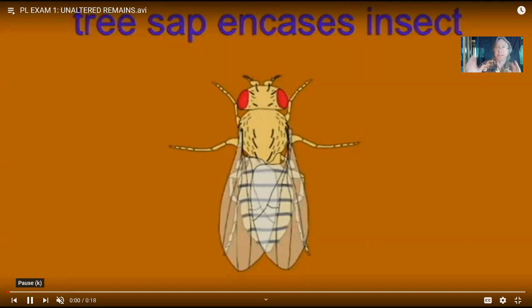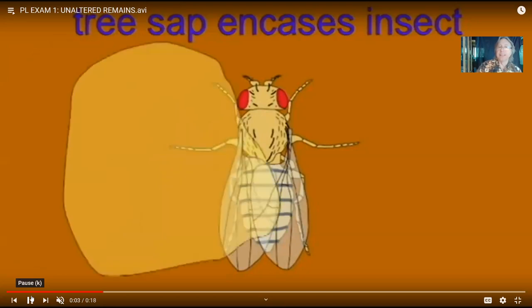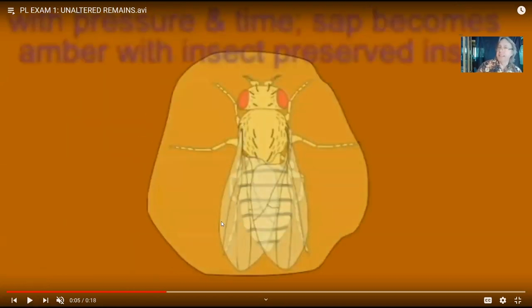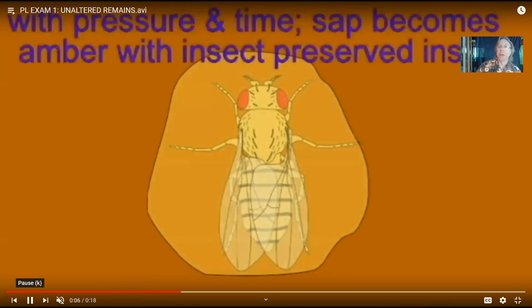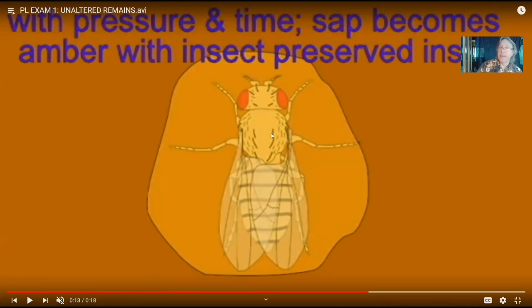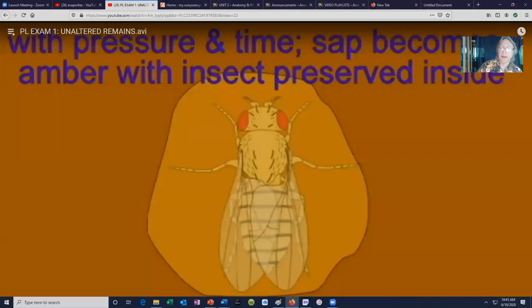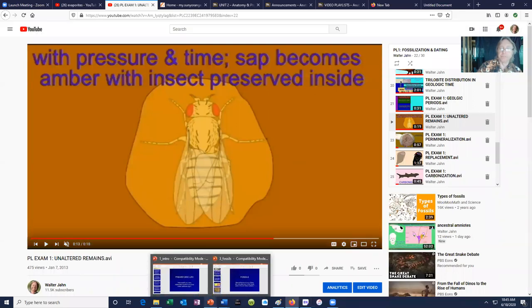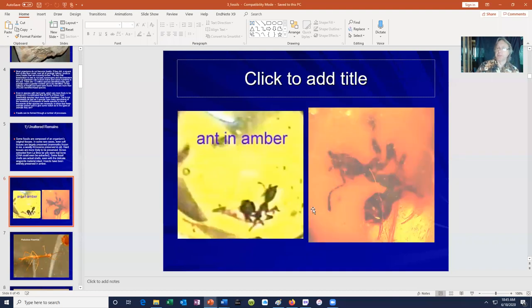First off, there is the best case. Say an insect dies and is encased in tree sap — maybe it died near a broken limb — and then with pressure and time this tree sap becomes rock called amber. The insect would then be preserved inside. This is what's called an unaltered remain, in that the insect's cells are still there with the DNA. DNA could then be extracted. In the movie Jurassic Park, that was the premise — that DNA is preserved in amber.